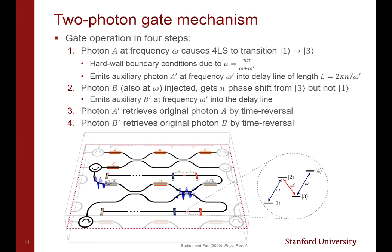In step 1, photon A with frequency ω causes the four-level system to transition from state |1⟩ to state |3⟩ due to hardwall boundary conditions that I will discuss shortly. The transition has an amplitude which depends on the magnitude of the |1⟩ component of the photon state that is directed into the waveguide, and it emits an auxiliary photon, photon A′ at a frequency ω′ into a delay line, which is matched in length to ω′.